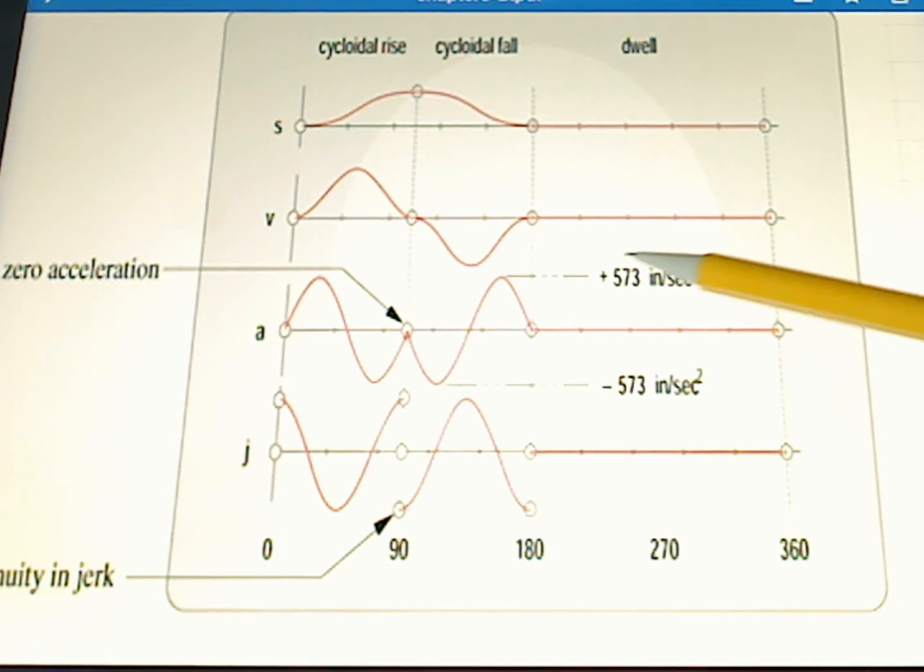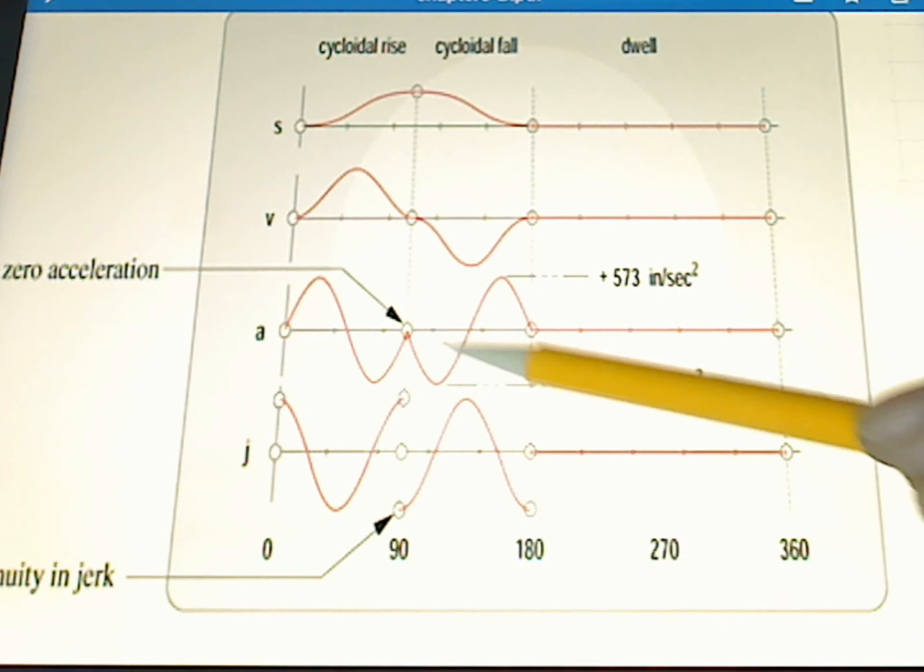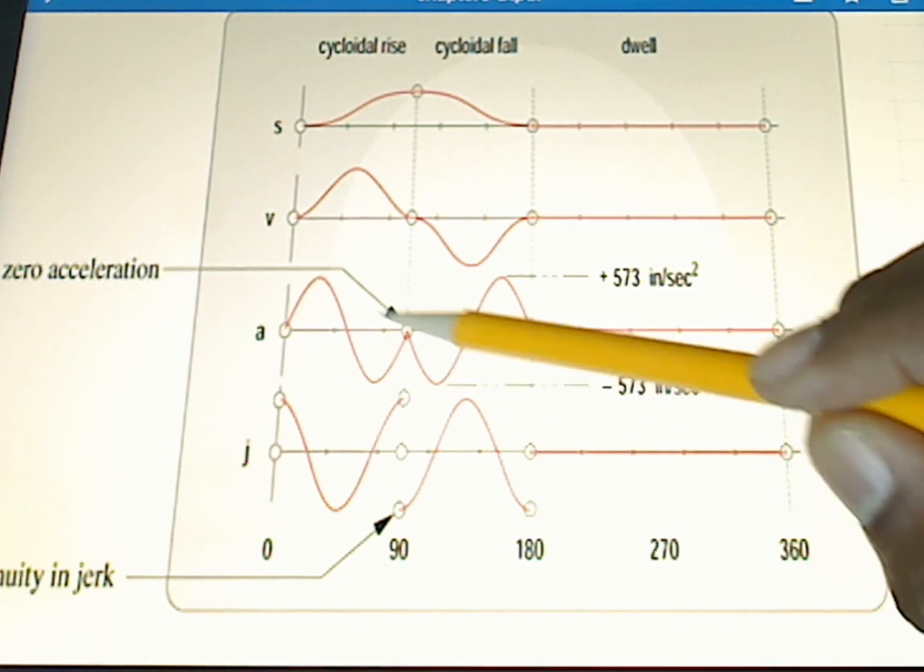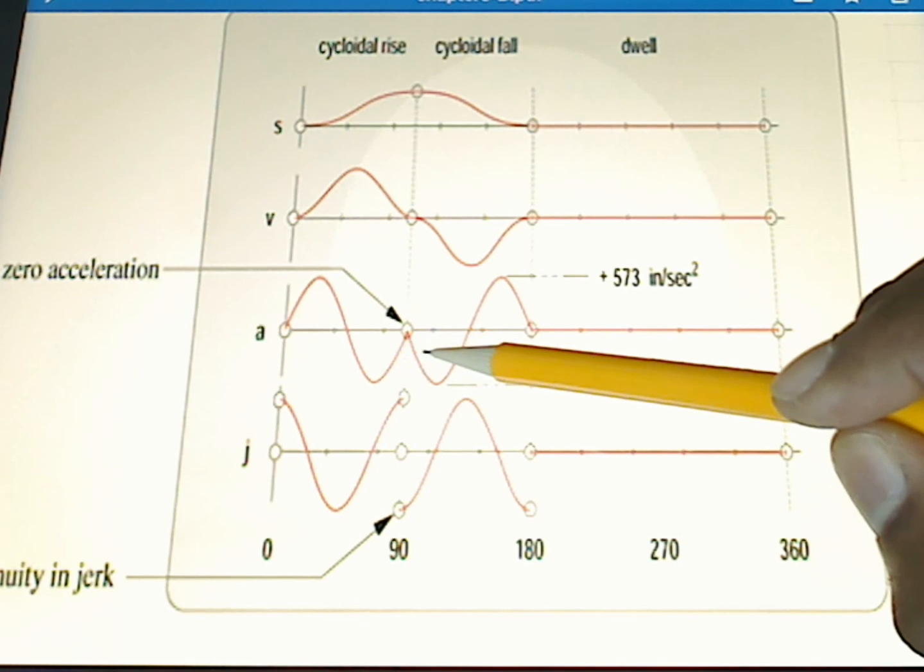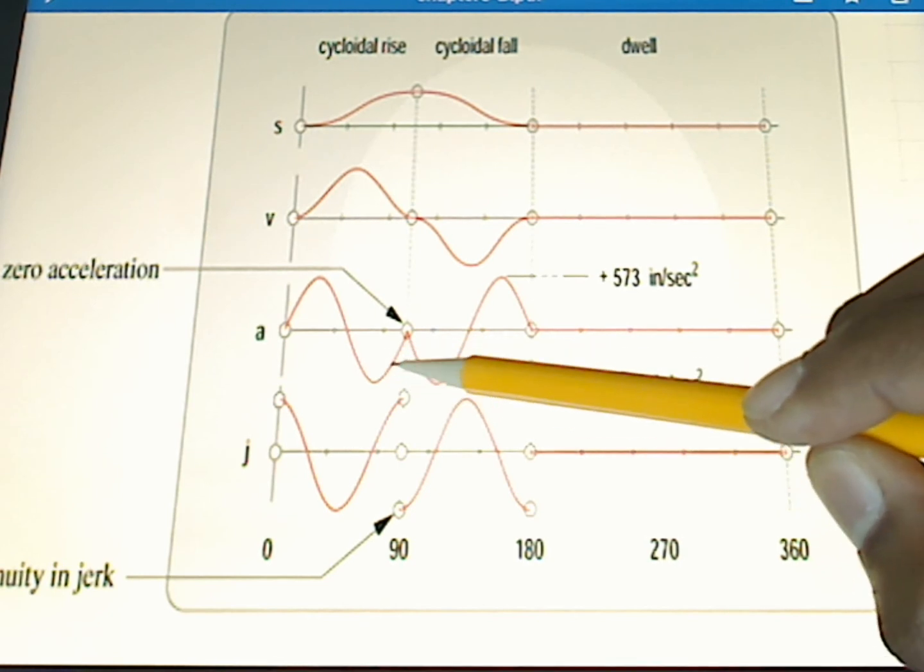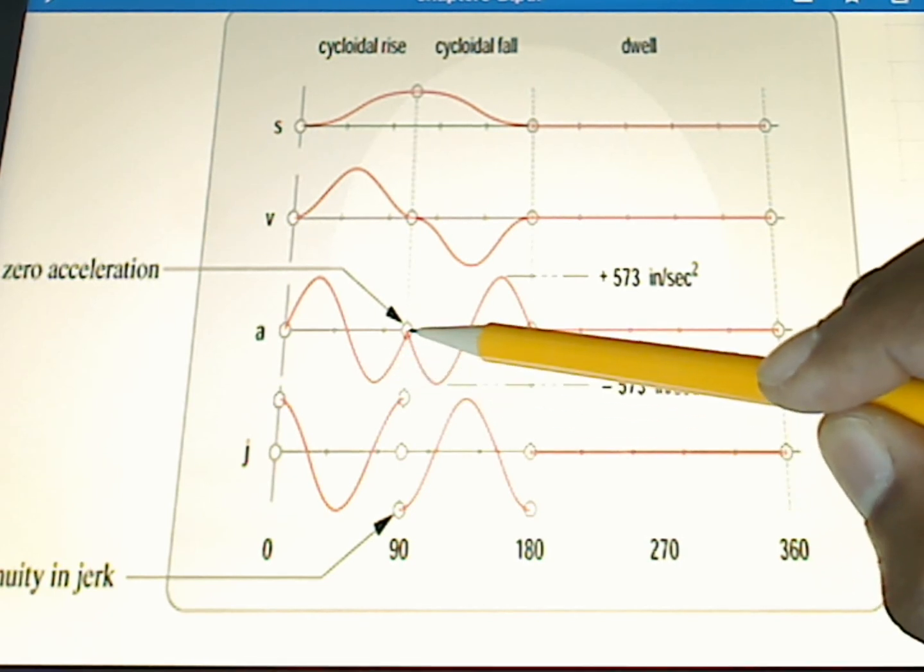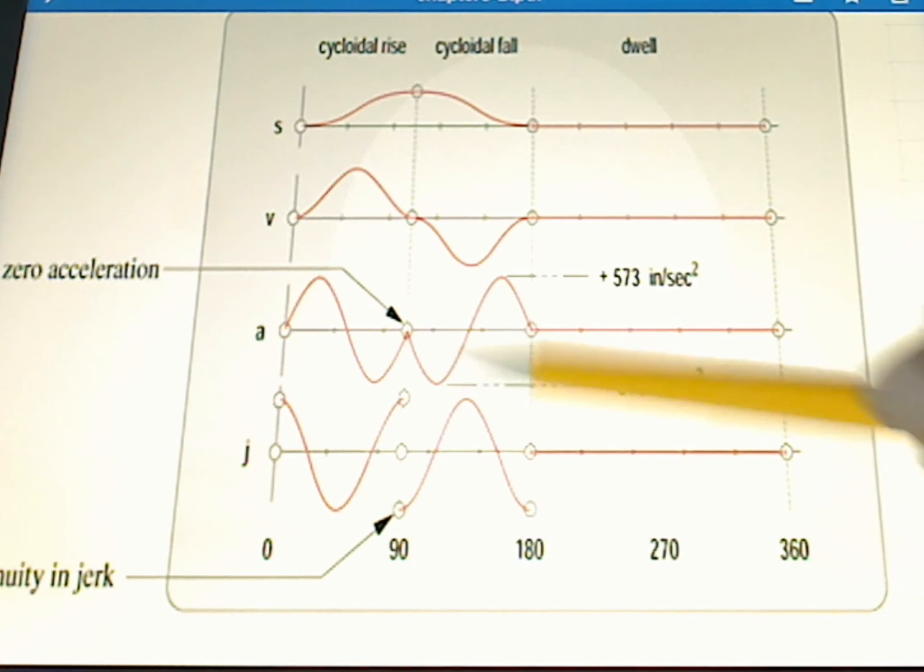Notice our peak acceleration is 573 inches per second squared. This is kind of a weird thing to happen with our acceleration, because our acceleration is remaining negative. It makes you wonder why it was necessary to come to zero and then come back down again.